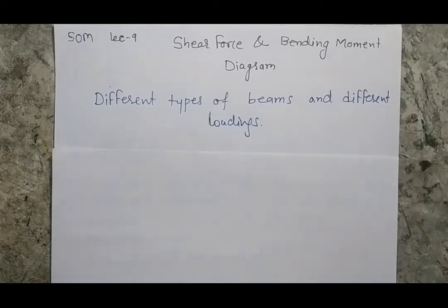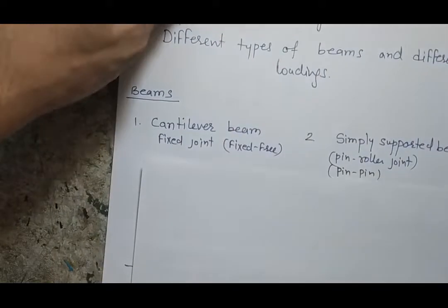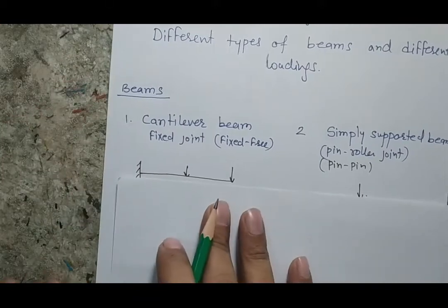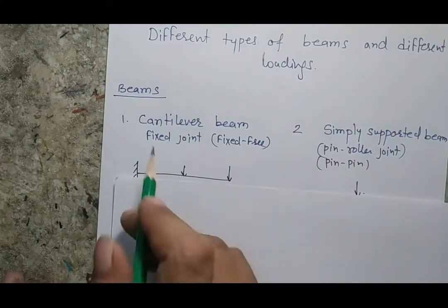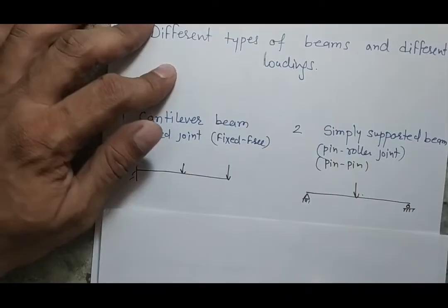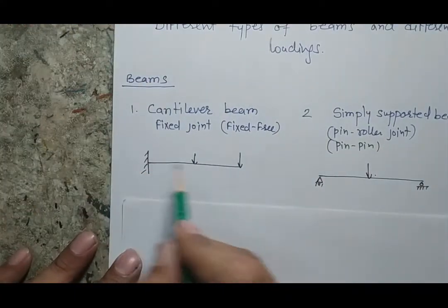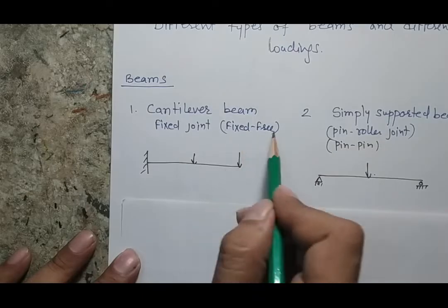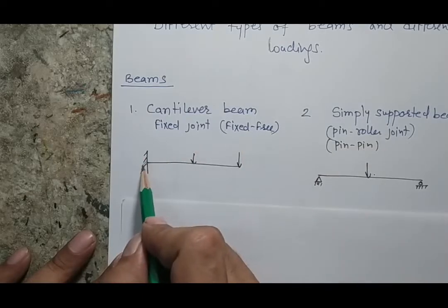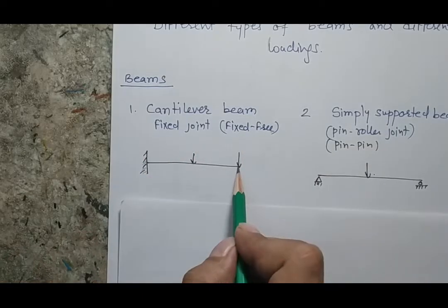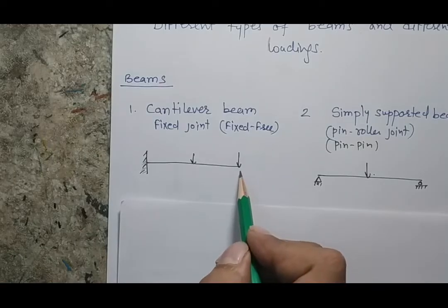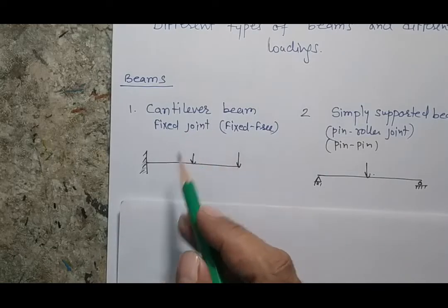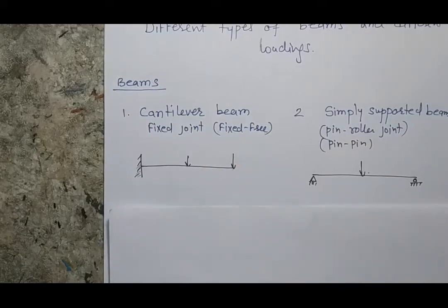We are going to consider three types of beam. The first beam is a cantilever beam, which has a fixed end and a free end. We also call it a fixed-free beam, where one end is fixed and the other end is free.